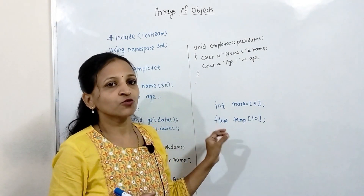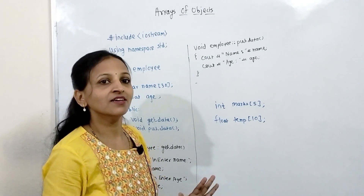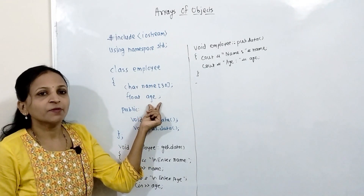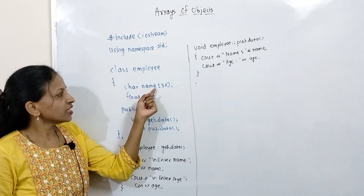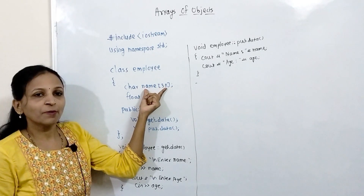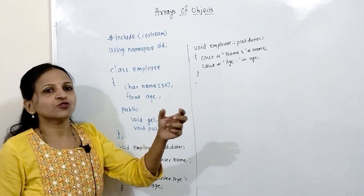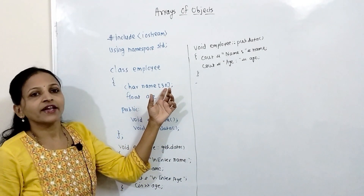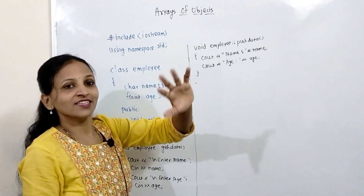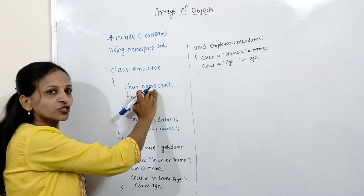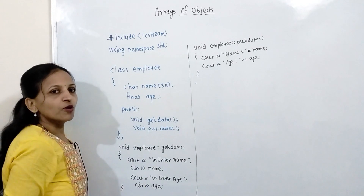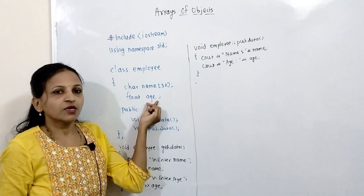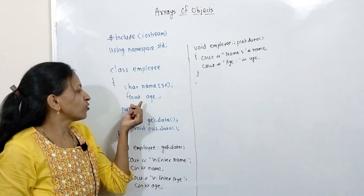Here with the help of an example I am going to explain this concept. I have created an Employee class and inside it two data members are declared. The name member is an array of characters to store the name of an employee. And the age data member is created of type float to store the employee's age.